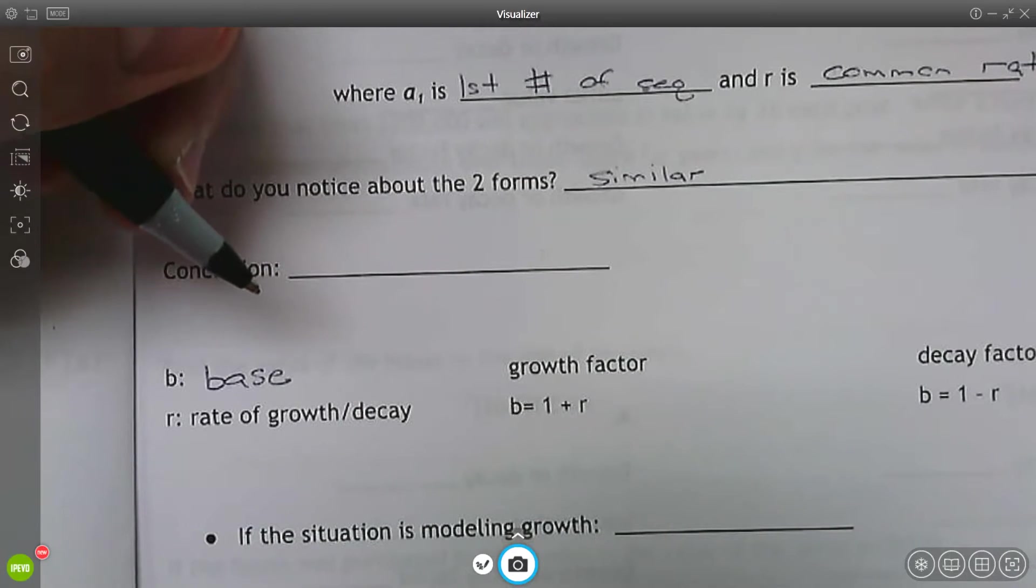And the way that we do that is we look specifically at the base. And think about it this way. If you multiply by something larger than one, if I multiply by two, three, four, 1.5, 2.5, the numbers are going to get larger and larger. So that represents exponential growth.